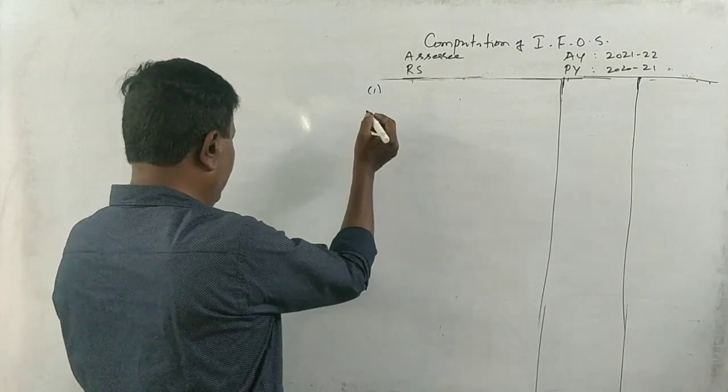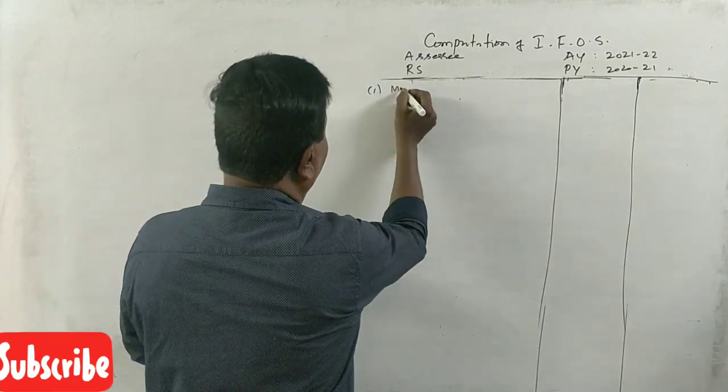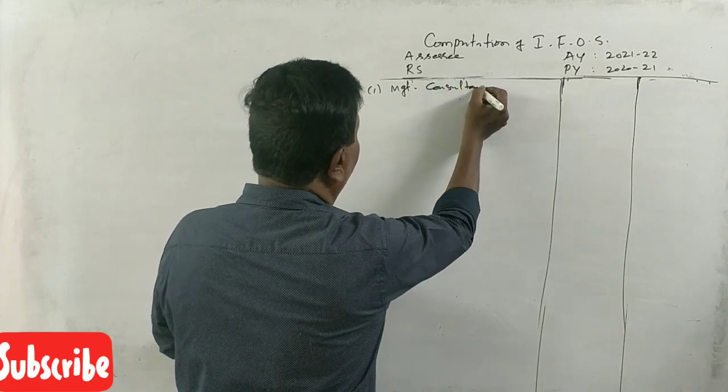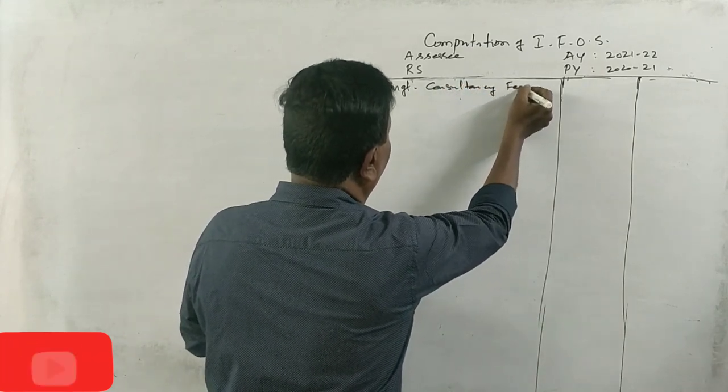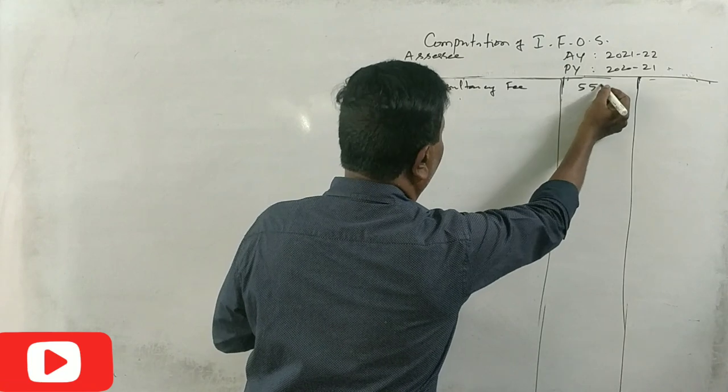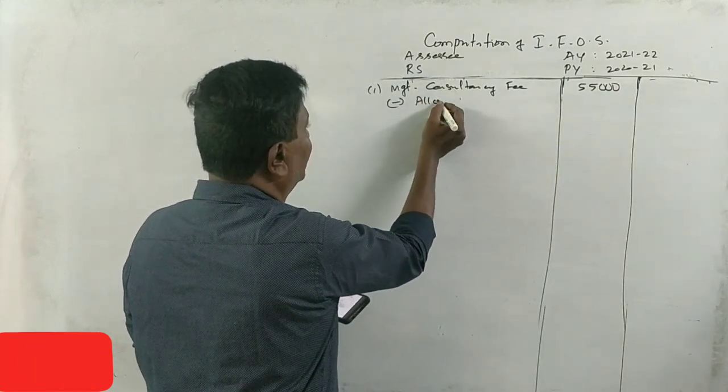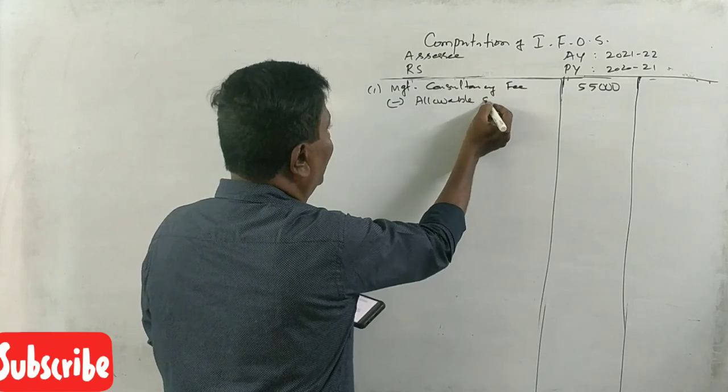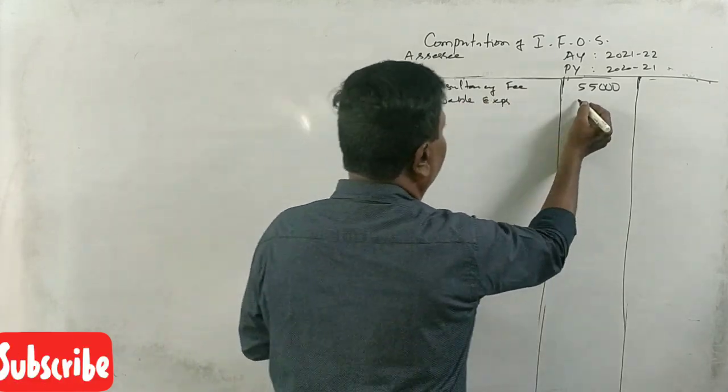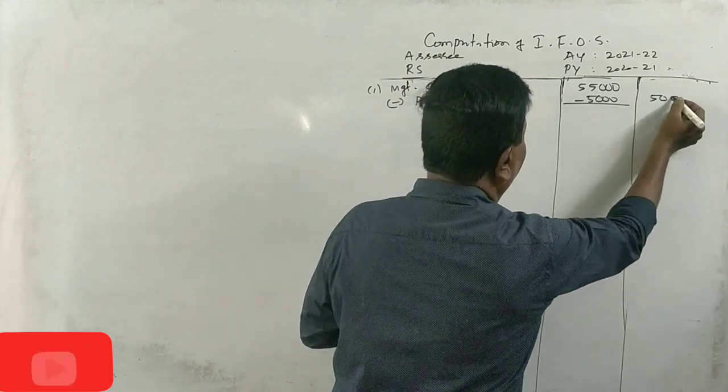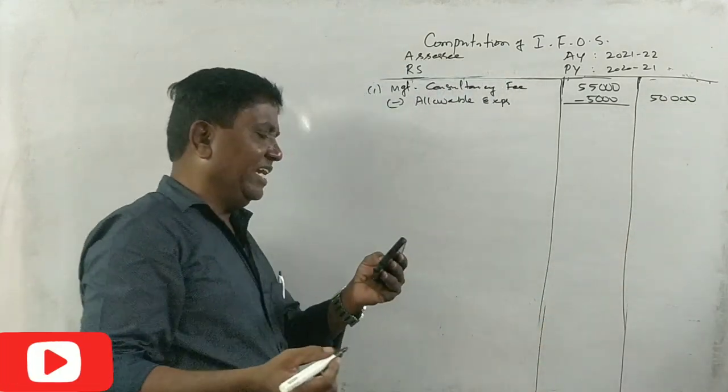Management consultancy fee, 55,000. Either link, allowable expenses. So allowable expenses, 5,000 and 50,000 is taxable.